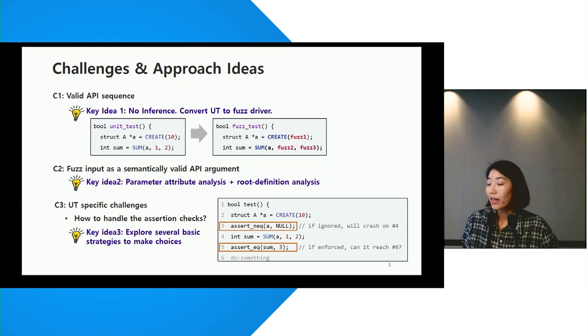Secondly, how to provide fuzz input as a semantically valid API argument. For this part, we analyze attributes of parameters and introduce root definition analysis technique. Finally, there are unique challenges coming from using unit tests.